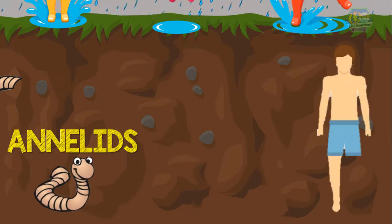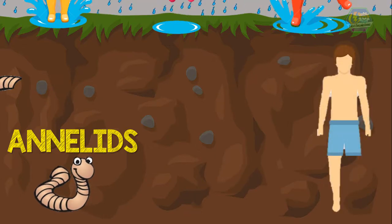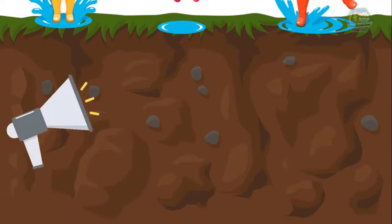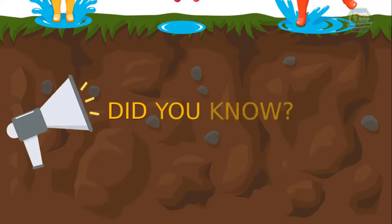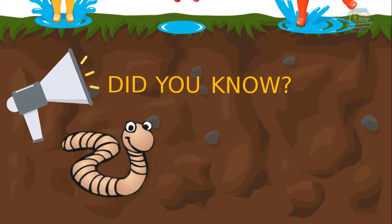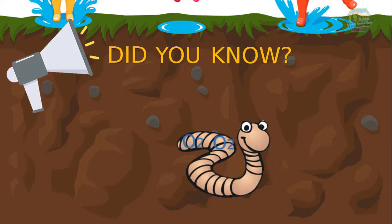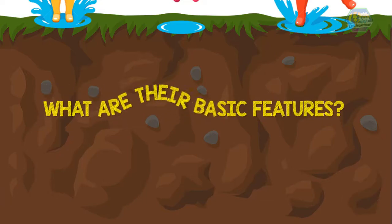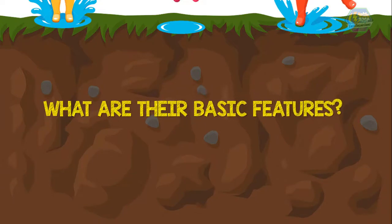If one segment is damaged, some annelids can go on living — unlike us humans, if we lose a part of our body, we might be in a terrible situation. Fun fact, learners: did you know that annelids breathe through their skin? That's because they don't have lungs; they have a special skin for getting oxygen. So what are their basic features?